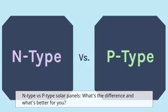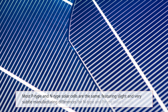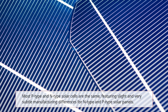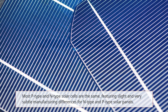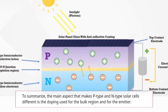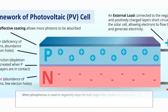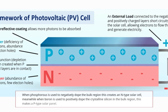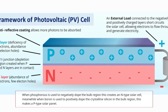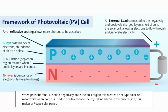N-type vs. P-type solar panels: what's the difference and what's better for you? Most P-type and N-type solar cells are the same, featuring slight and very subtle manufacturing differences. To summarize, the main aspect that makes P-type and N-type solar cells different is the doping used for the bulk region and for the emitter. When phosphorus is used to negatively dope the bulk region, this creates an N-type solar cell. Meanwhile, when boron is used to positively dope the crystalline silicon in the bulk region, this makes a P-type solar panel.